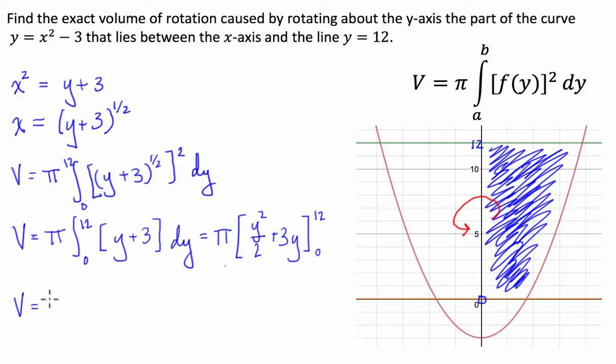Forgot to put my pi out the front. Pi times 72 plus 36, and then we're going to be taking 0 plus 0, so take 0, and this is equal to 108 times pi.